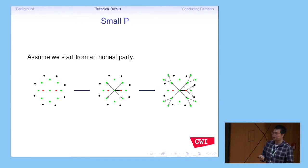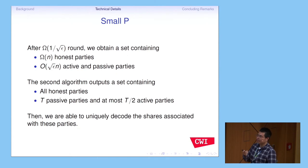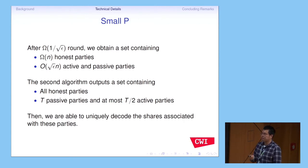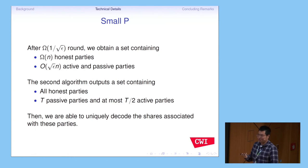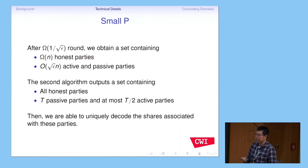Because the honest party is the vast majority, we use a probabilistic argument to find all honest parties and some passive parties, while active parties are fewer than passive ones. Since we encoded using the Reed-Solomon code — which has very good redundancy — we can use a unique decoding algorithm to decode correctly.